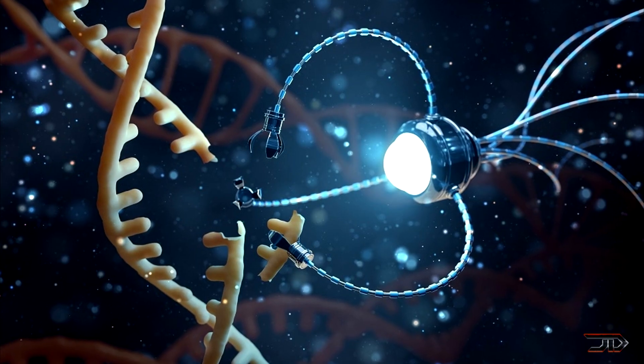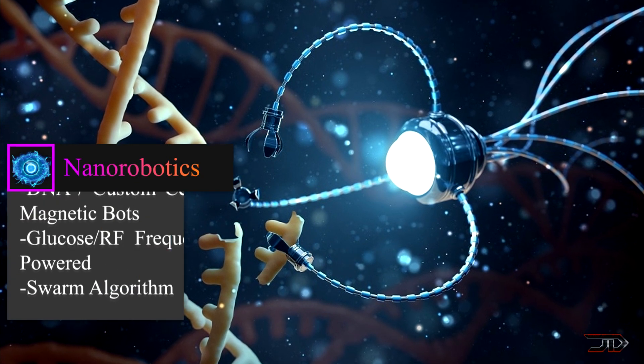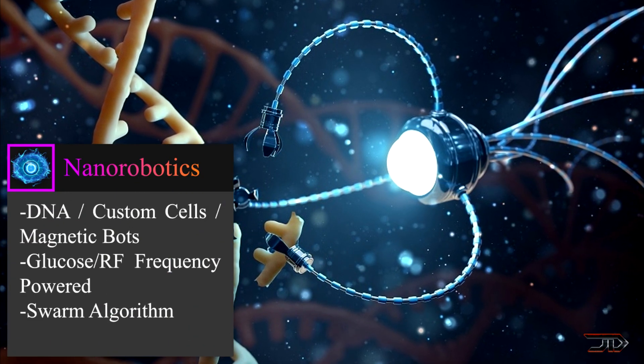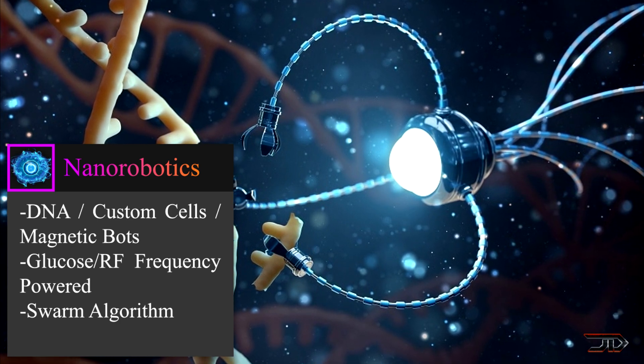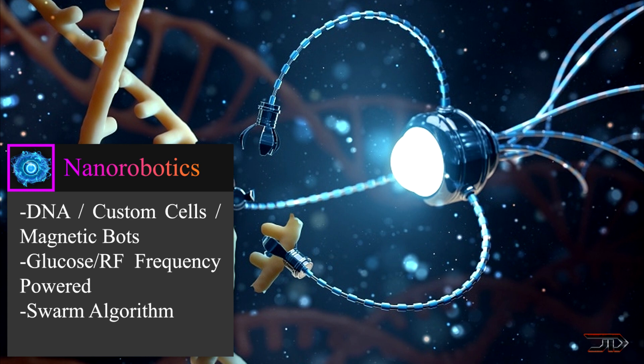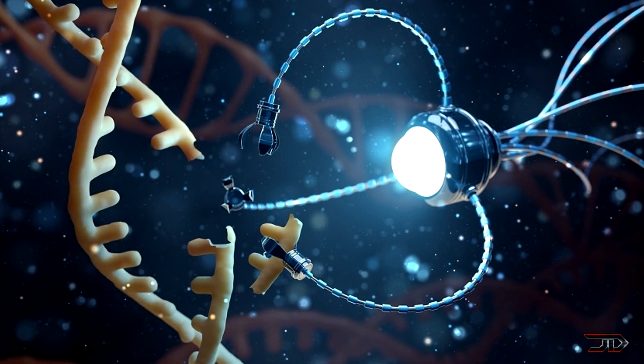As a conclusion to this video, I would say that the future nanorobot would likely be powered by glucose or maybe some type of RF frequency. It will also have swarm integration and communication. Right now, the front-running structural candidates include DNA machines, programmed cells, and even basic magnetic bots.